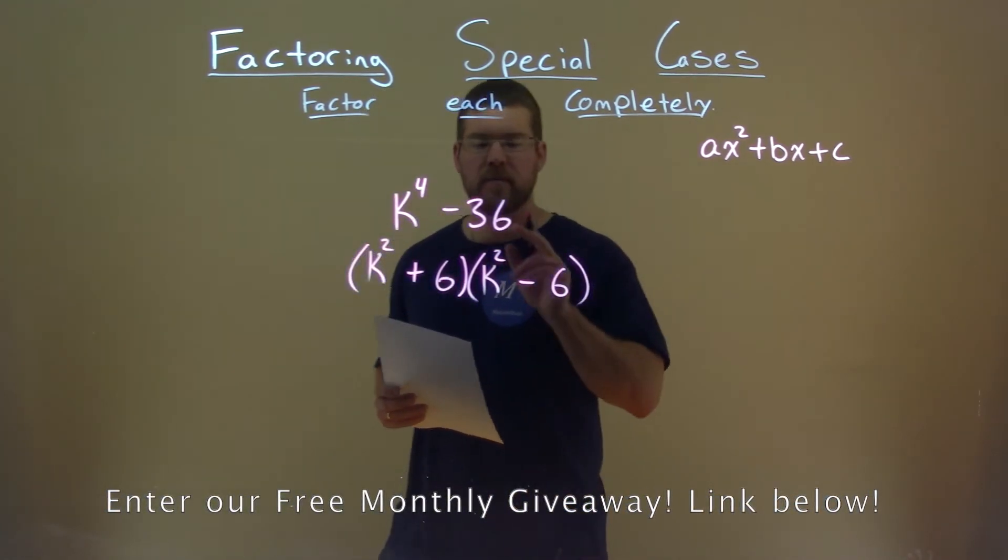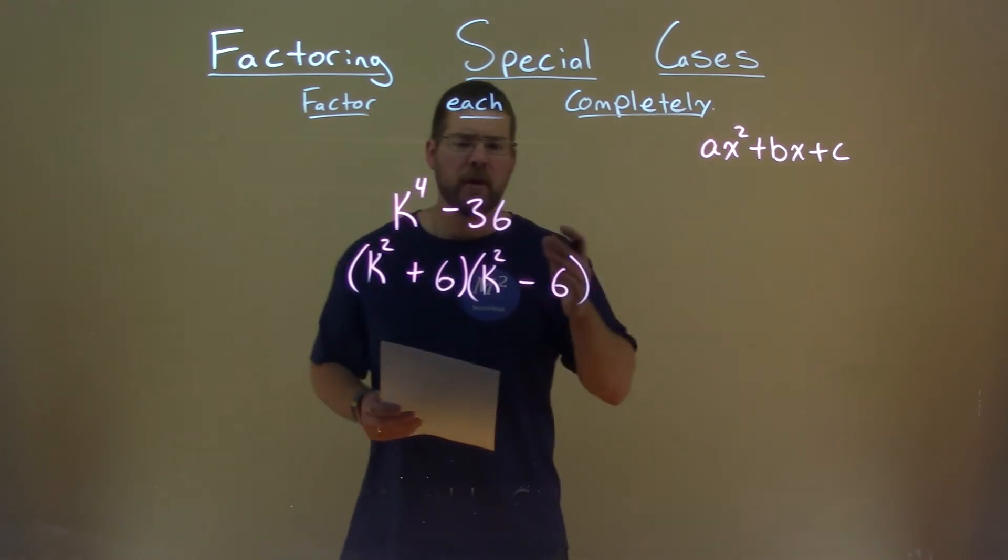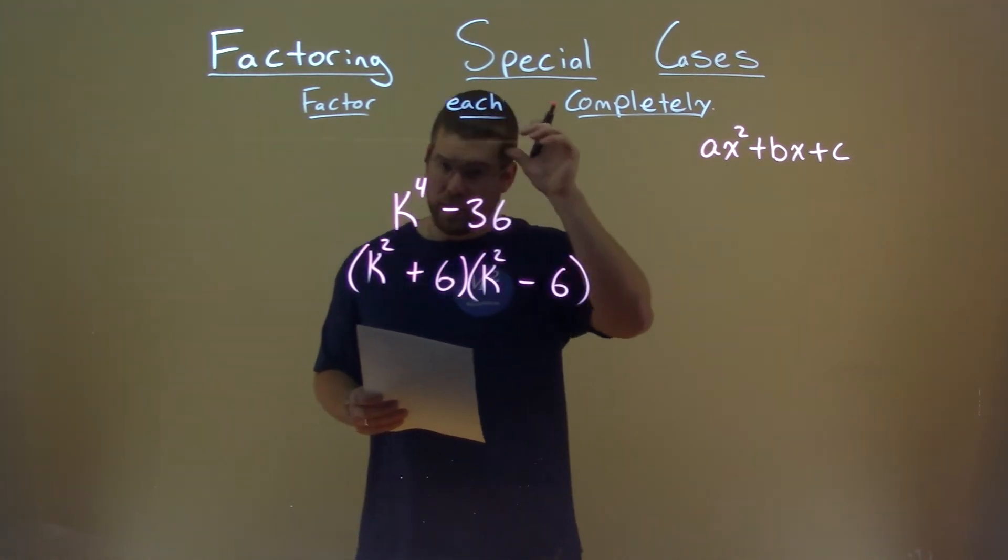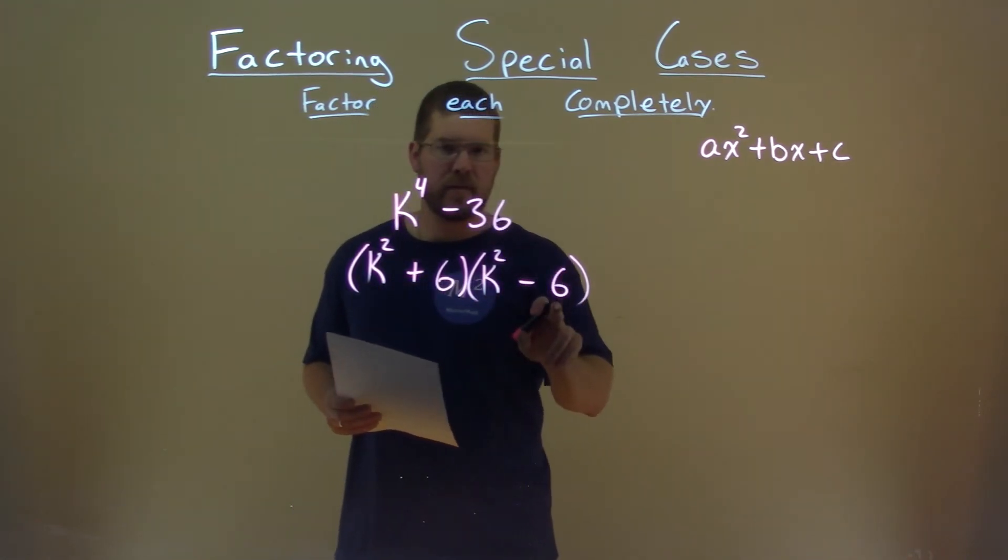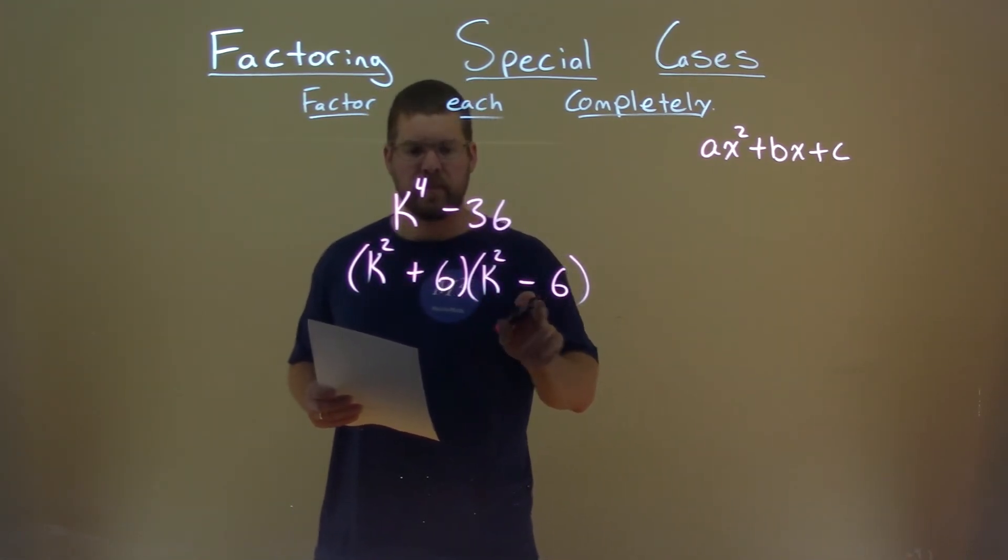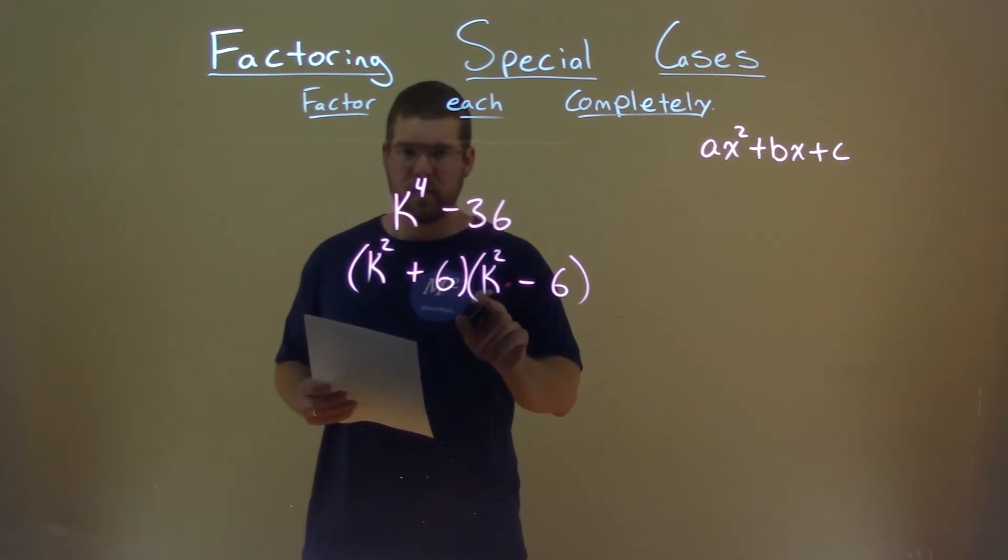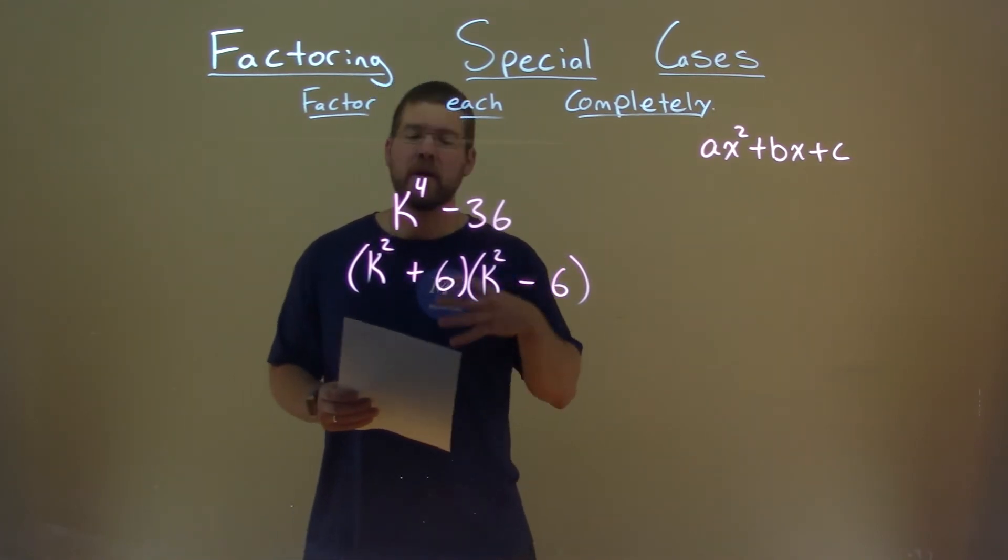6 times minus 6 is negative 36. But here's the kicker, our b value. Our b value here is 0. k squared times minus 6 is negative 6k squared. 6 times k squared is positive 6k squared. Add them together, you get 0.